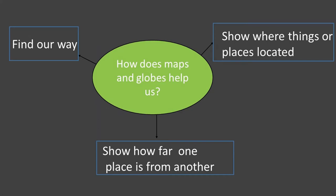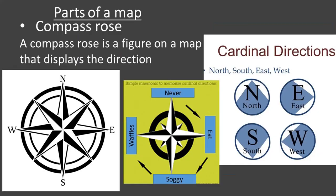We should all know the reason why we are studying about maps and globes. How do maps and globes help us? There are three ways: first, to find our way — just like Dora the Explorer, who always gets help from the map to find a place. Second, to show where things or places are located. Third, to show how far one place is from another.